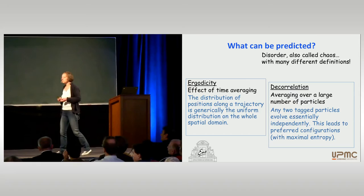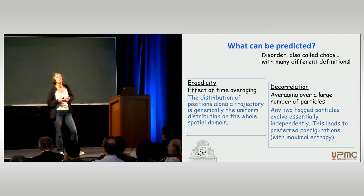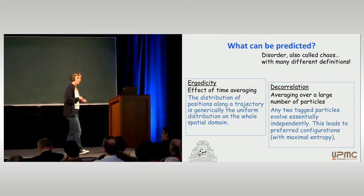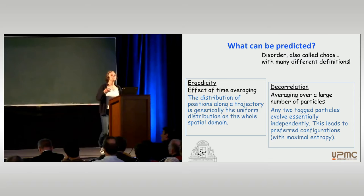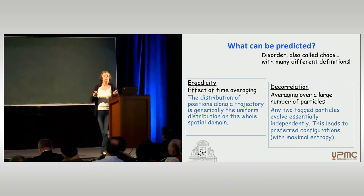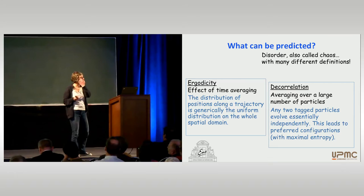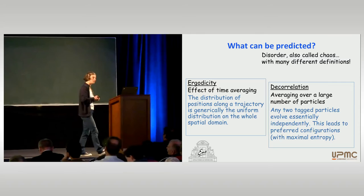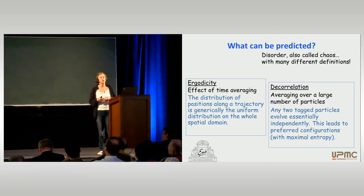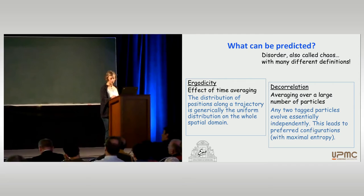But then there is another interesting mixing property related to the large number of particles. If you consider a gas, you expect N to be very large, typically of the order of the Avogadro number. What you expect is that because you have so many particles, if you take any two fixed, tagged particles, then you expect these particles to be essentially uncorrelated. The correlation is another expression of disorder, and this is probably the most important one in statistical physics — essentially this is what I would like to study right now.